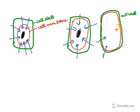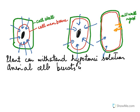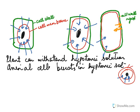The cell wall is rigid, so it can withstand the pressure — the plasma membrane exerts pressure outward while the cell wall exerts pressure back inward. This is why plant cells can withstand hypotonic solutions, whereas animal cells burst in hypotonic solution. In animal cells there is nothing outside the cell membrane, so as water keeps entering, the cell keeps expanding until it can expand no more and bursts.